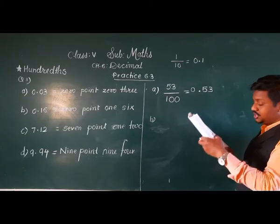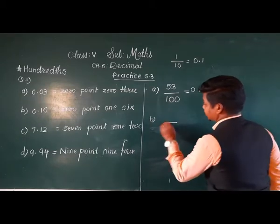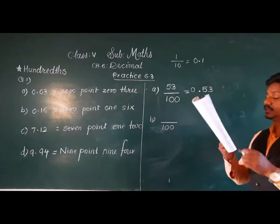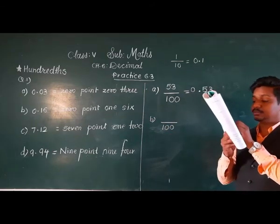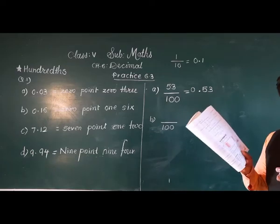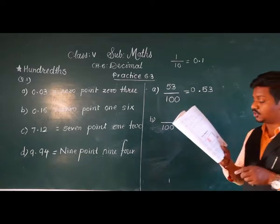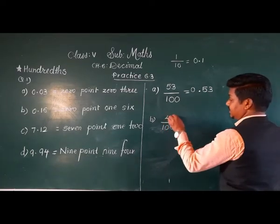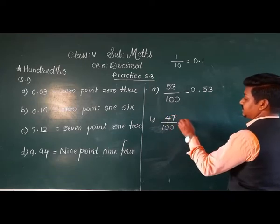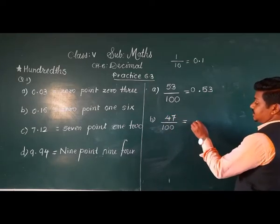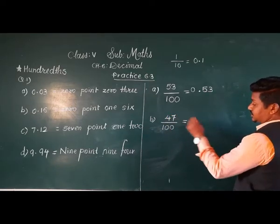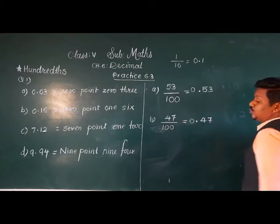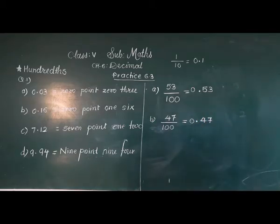Next grid: total 100 squares. How many are shaded? 4 complete strips are shaded — 4 times 10 is 40 — plus 7 more: 47 boxes are shaded. So after the decimal point we want 2 digits. The decimal is 0.47.